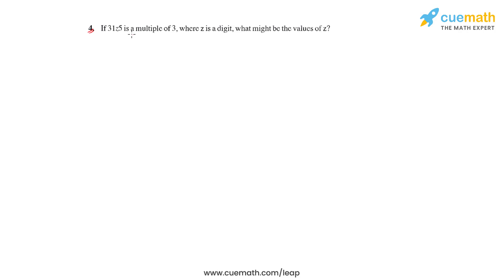So in this fourth question of the second exercise, we have been given a number which is 3 1 z 5, which is a multiple of 3, where z is a digit, and we'll have to find the different values of z.